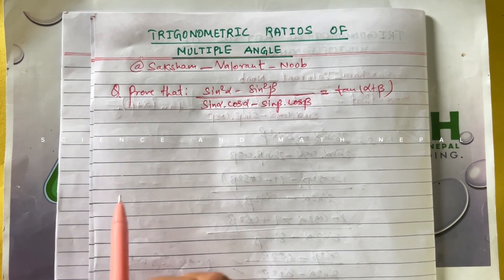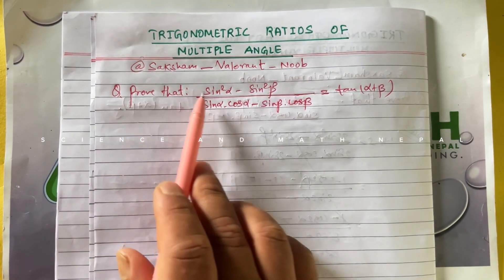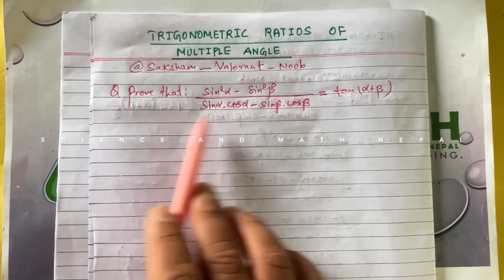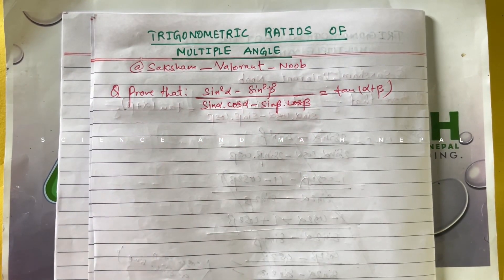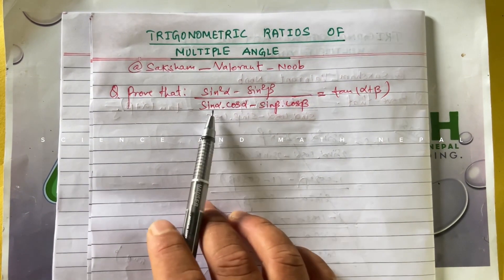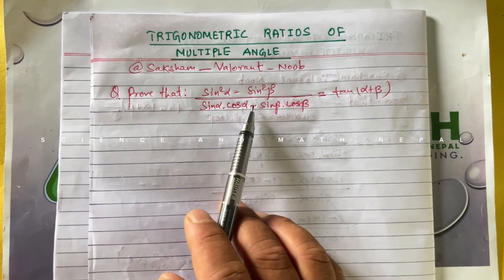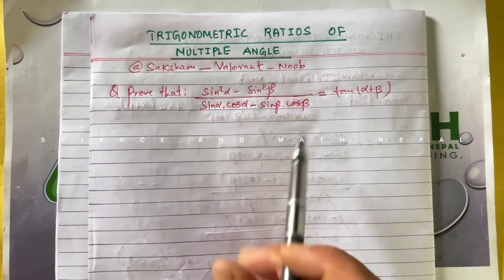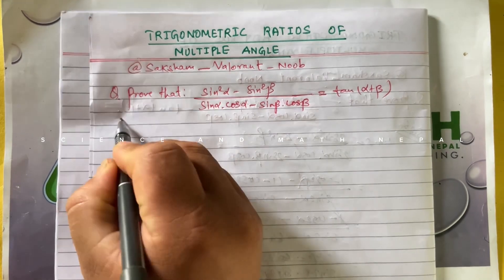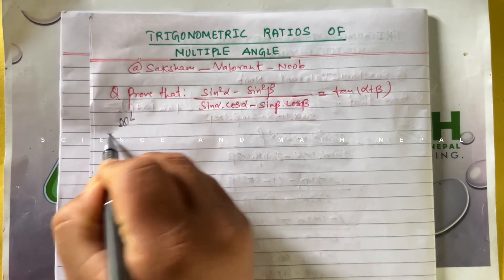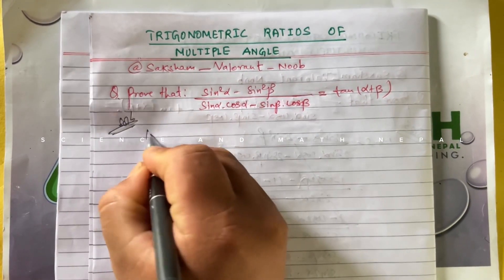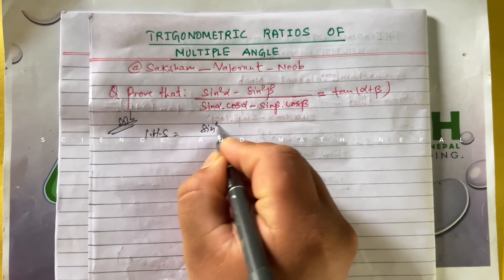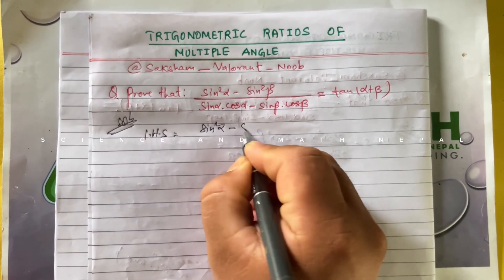Let's start. Prove that: (sin²α - sin²β) divided by (sinα cosα - sinβ cosβ) equals tan(α + β). Solution: Let S equal (sin²α - sin²β) divided by (sinα cosα - sinβ cosβ).